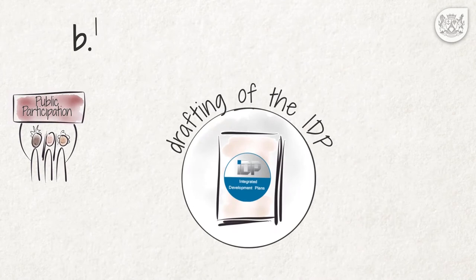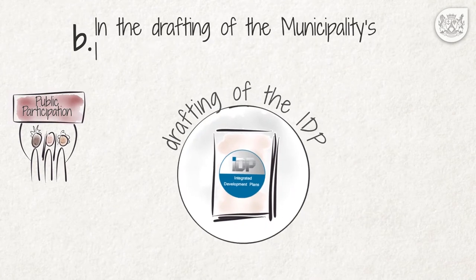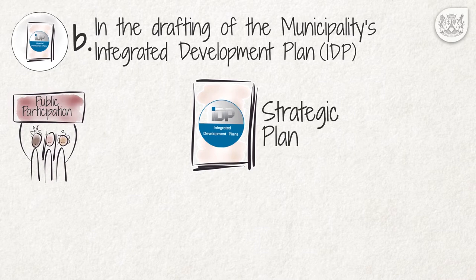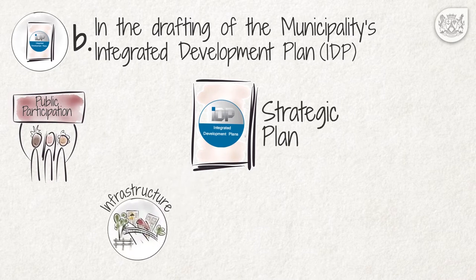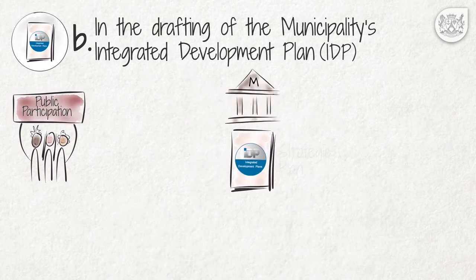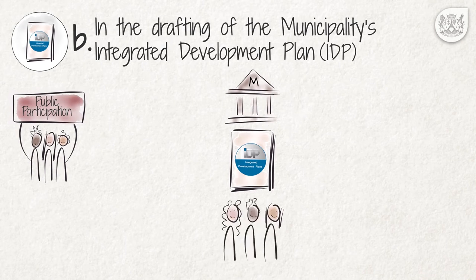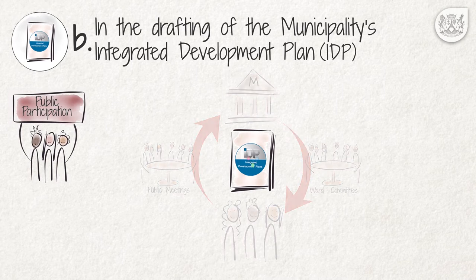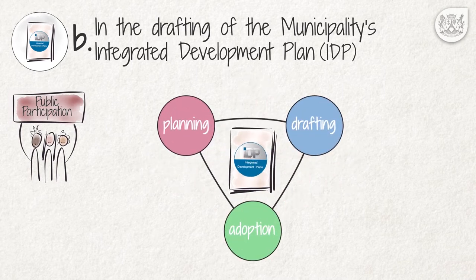B: In the drafting of the Municipality's Integrated Development Plan. The Integrated Development Plan, or IDP, is the Municipality's principal strategic plan on matters such as infrastructure, finance, staff, and economic development. A Municipality must involve the local community through the ward committees and public meetings on the planning, drafting, and adoption of the IDP.